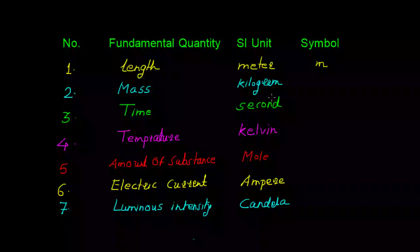Second fundamental quantity is mass. Its SI unit is kilogram and its symbol is kg. Third fundamental quantity is time. Its SI unit is second and its symbol is s.